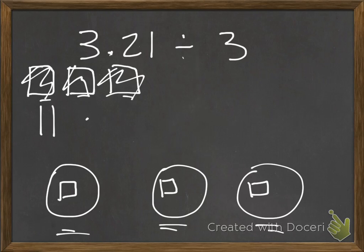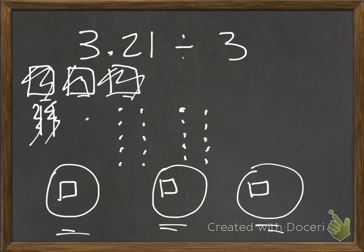Moving on to my tenths blocks: I only have two tenths blocks and three groups, so I can't distribute them equally. I need to regroup. I take one tenths block away and make ten hundredths pieces, then do the same for the other tenths piece. Now I have a total of twenty hundredths from the tenths pieces, plus the original one hundredth from the problem, leaving me with twenty-one hundredths total.